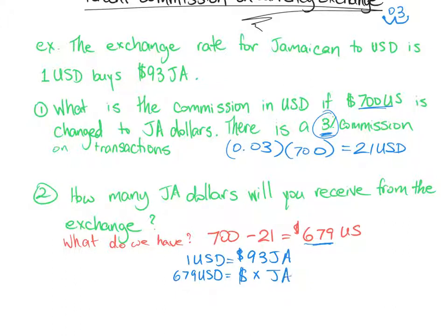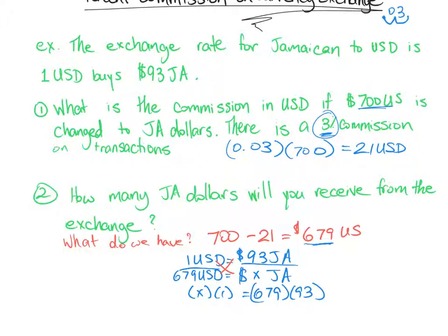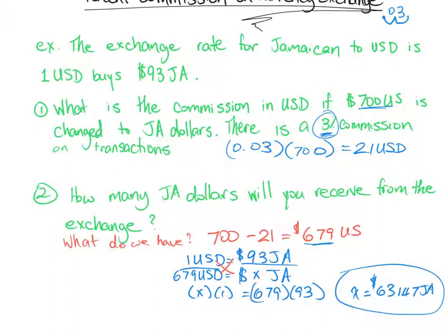We put X for the unknown number of Jamaican dollars and cross multiply. We get X times 1, or just X, equals 679 multiplied by 93. Multiplying those gives us 63,147 Jamaican dollars. So to recap, with our 700 US dollars we'll be able to get 63,147 Jamaican dollars.